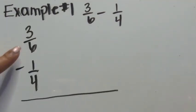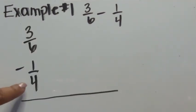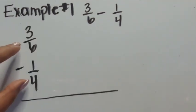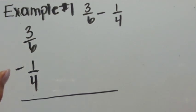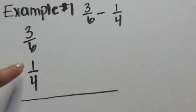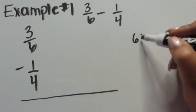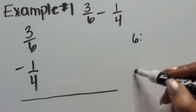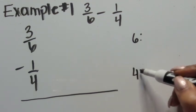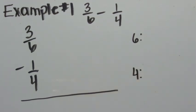So here we have three-sixths minus one-fourth. Our two denominators are different, so we can't subtract them the way that they are. We have three-sixths and one-fourth, so we're going to list out the multiples of six and list out the multiples of four and see what they have in common.